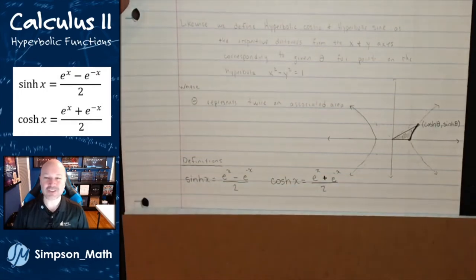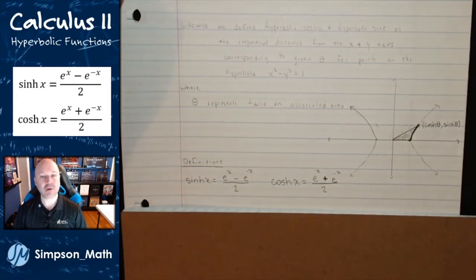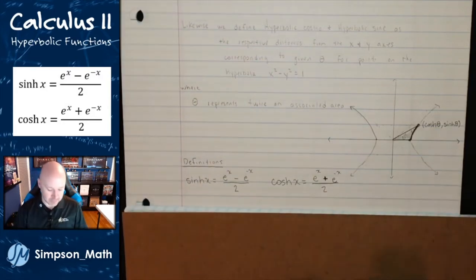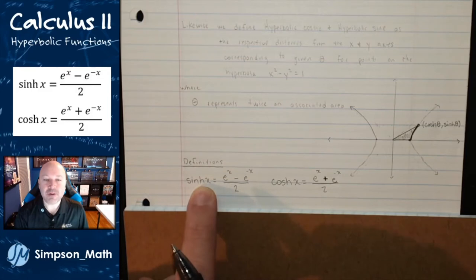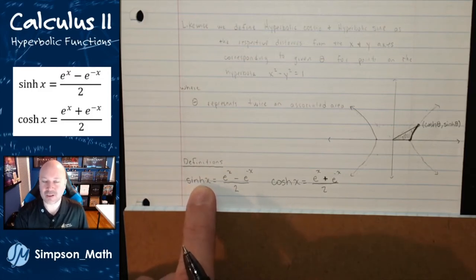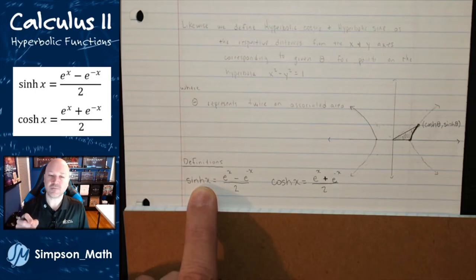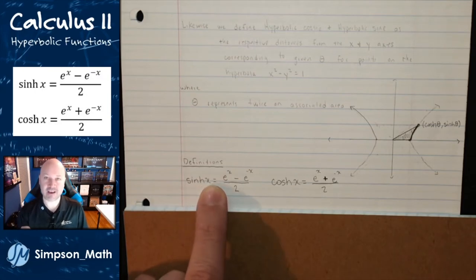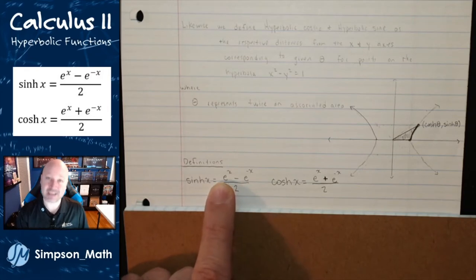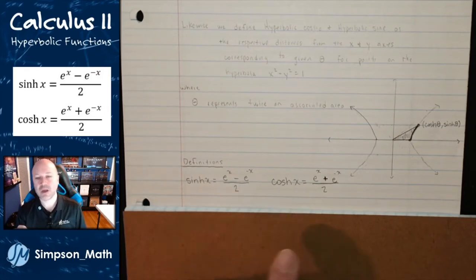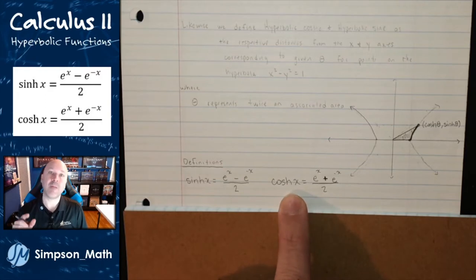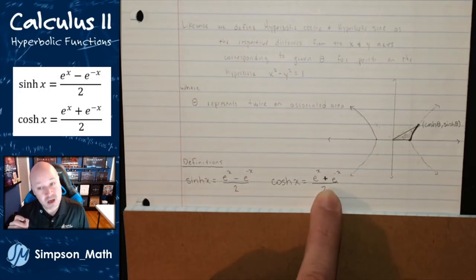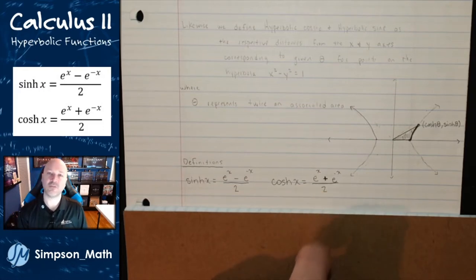The definitions are nice and easy to memorize. We have a new notation here. This is hyperbolic sine — it's sine with an h following it, and I pronounce that 'cinch,' like 'pinch.' Hyperbolic sine is defined as e to the x minus e to the negative x, over 2. Hyperbolic cosine I pronounce 'cosh,' like 'posh.' It's defined as the sum of e to the x and e to the negative x, over 2.